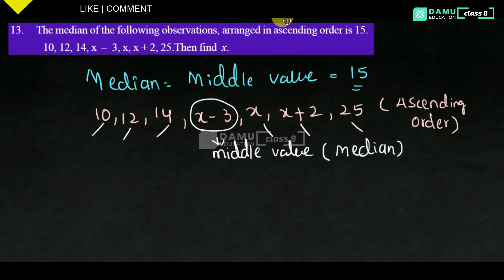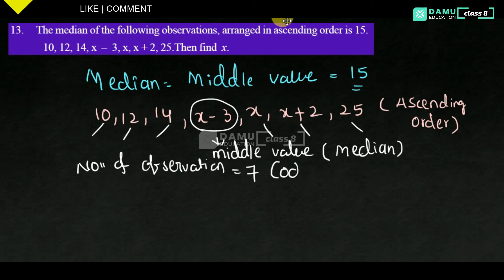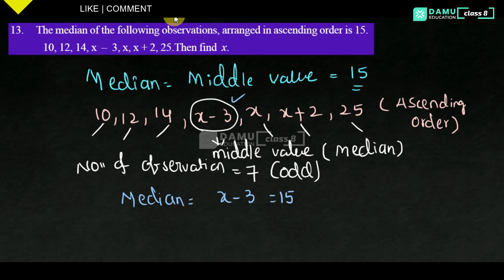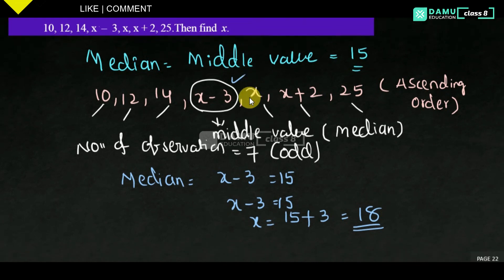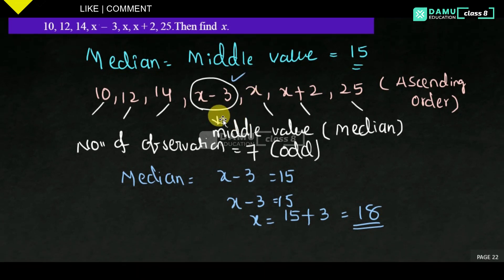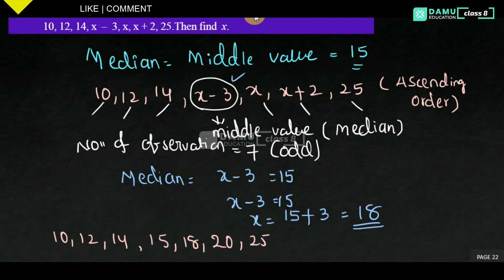The number of observations is 7, which is odd. For an odd count, the median is the (n plus 1) divided by 2-th term. So the median is x minus 3, and that equals 15. Therefore x equals 15 plus 3, which is 18. The observatory values become: 12, 14, 15, 18, 18, 20, 25. Thanks for watching, please subscribe.